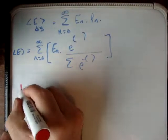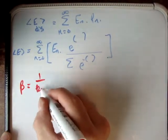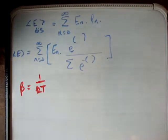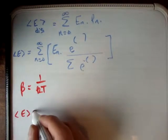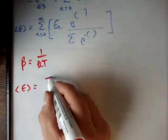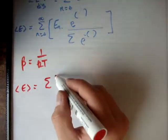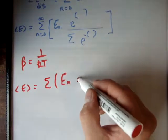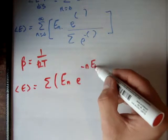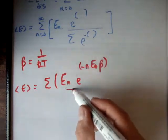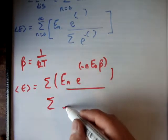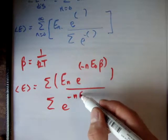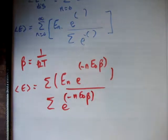The next thing I'm going to do is make a substitution. I'm going to say that β equals positive 1 over kT. You need to be careful with your substitutions. So the average energy becomes the sum of E_n times the exponential of negative n·E₀·β, all divided by the sum of e to the negative n·E₀·β.